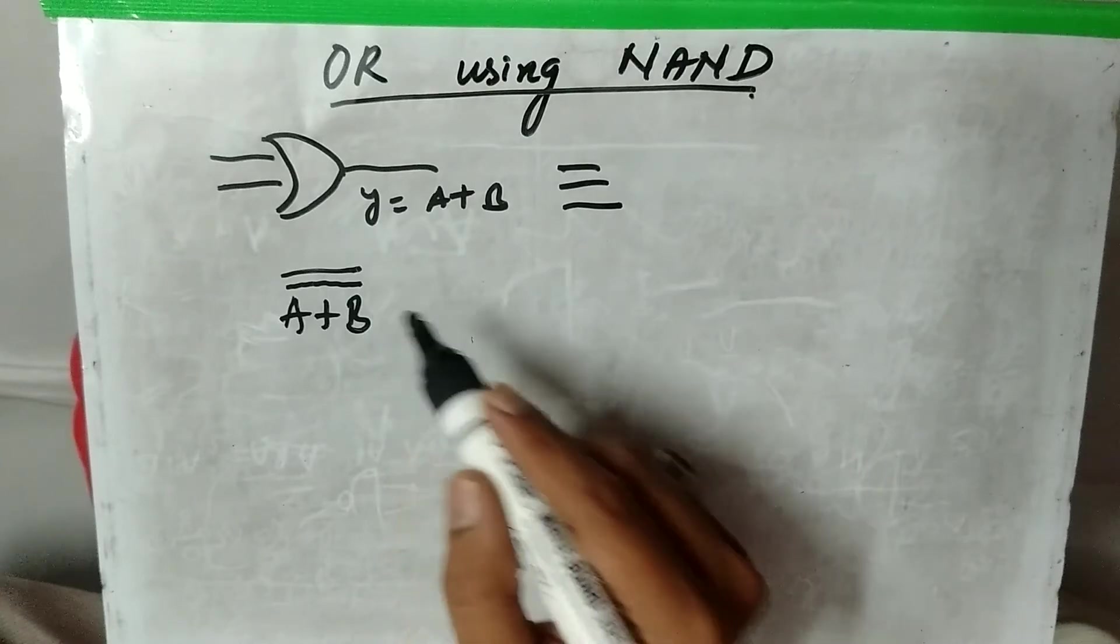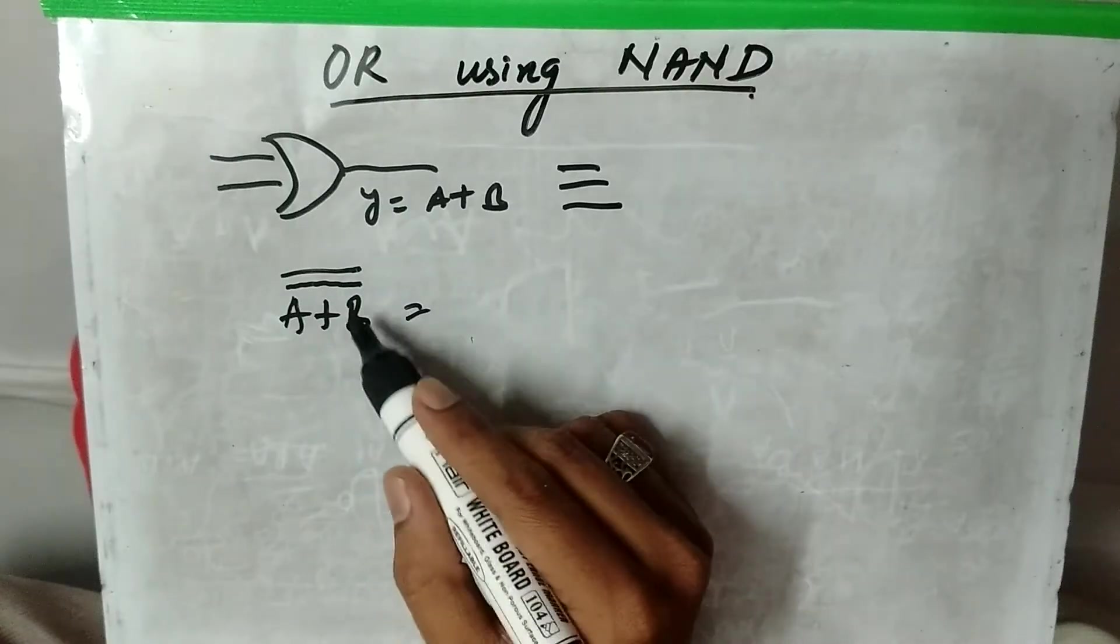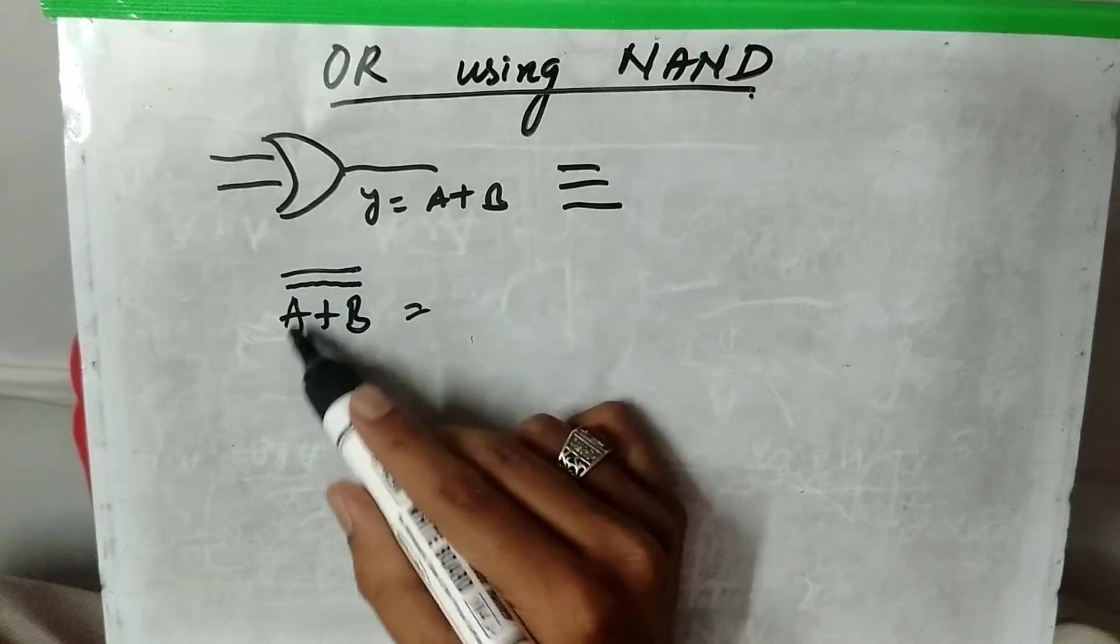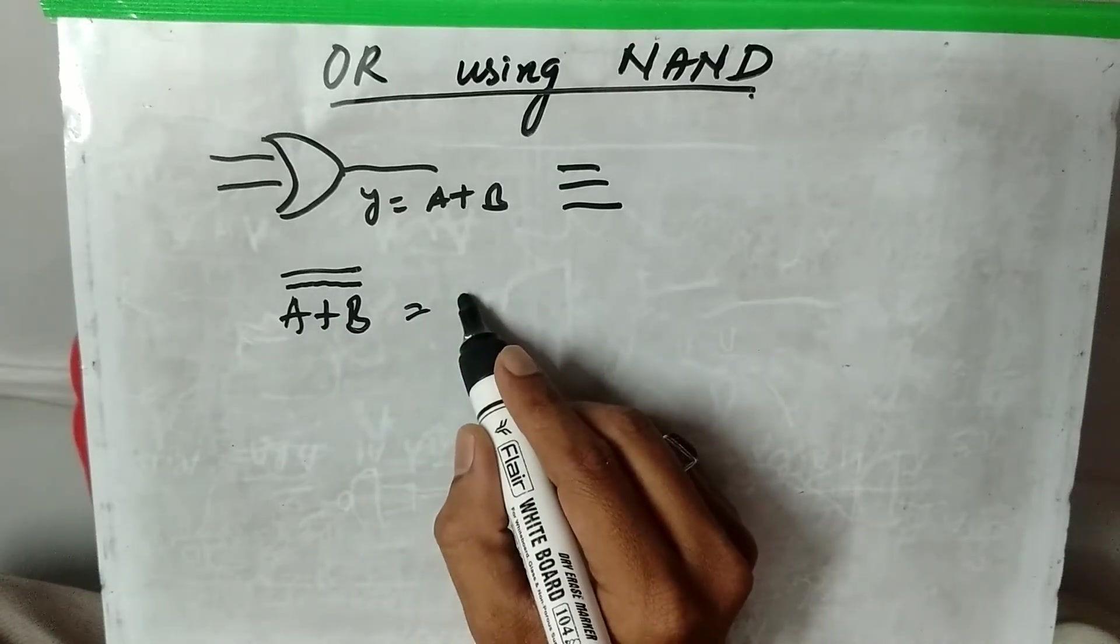If you are doing double bar, now let us apply De Morgan's theorem here. If you take A plus B whole dash two times, now you can open it using De Morgan's theorem.